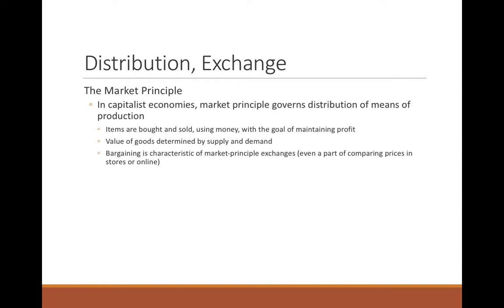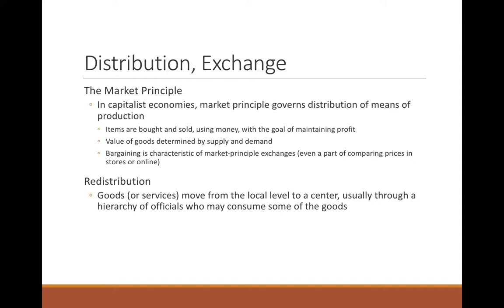In markets with free-form prices, what you see on a price tag isn't what you actually pay. A lot depends on how skilled you are at negotiating — walking away and saying it's too pricey will often prompt the seller to chase you down with a lower offer. Next, redistribution: this is where goods or services move from a local level to a center through a hierarchy of officials who may consume some goods — essentially taxation and redistribution. The flow of goods eventually reverses direction.